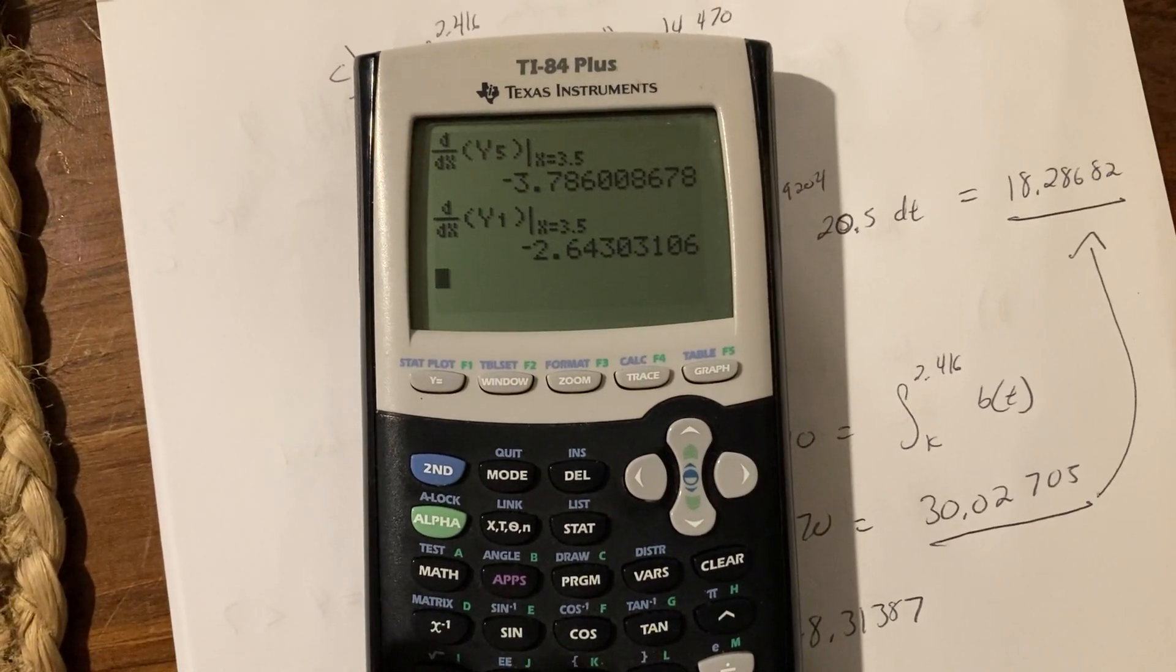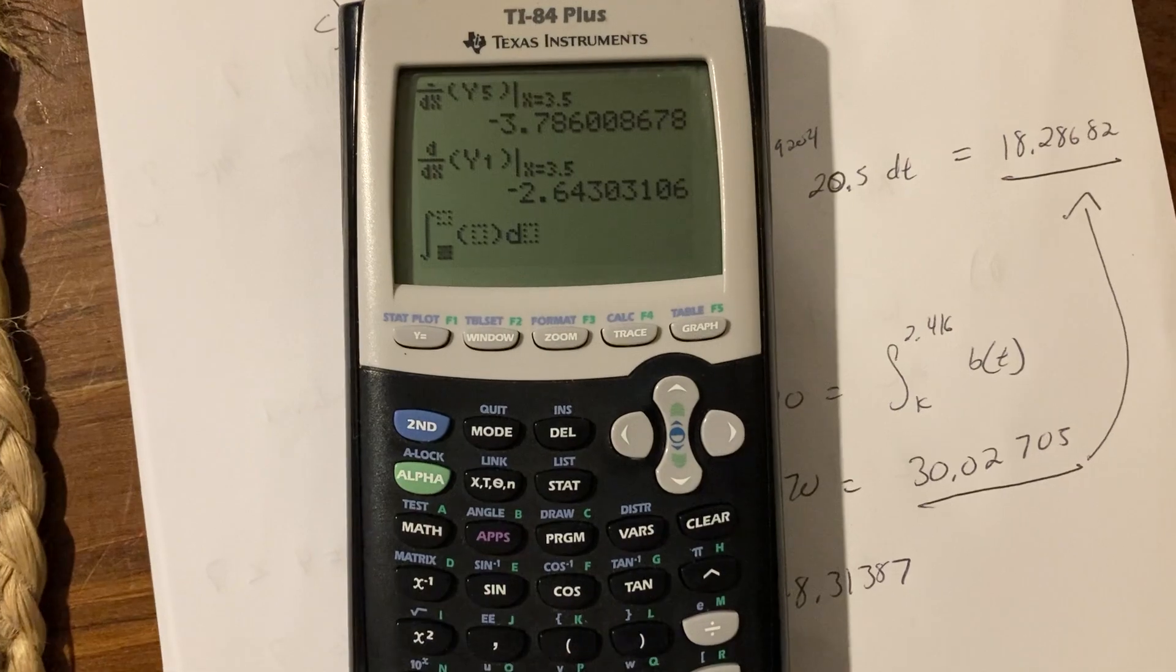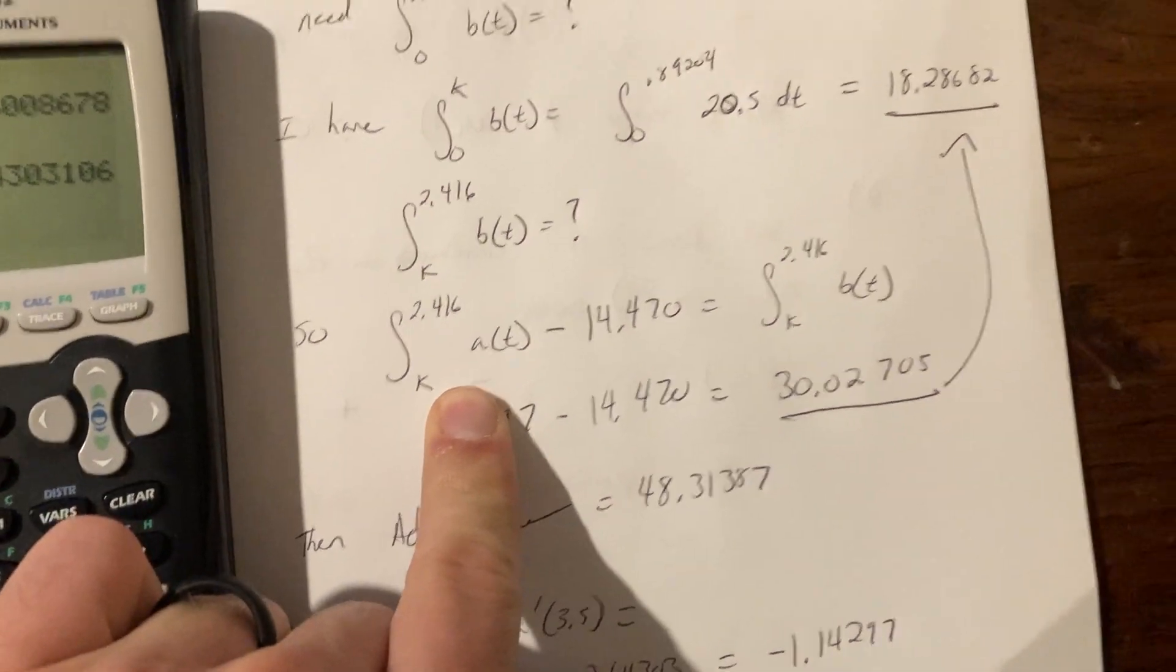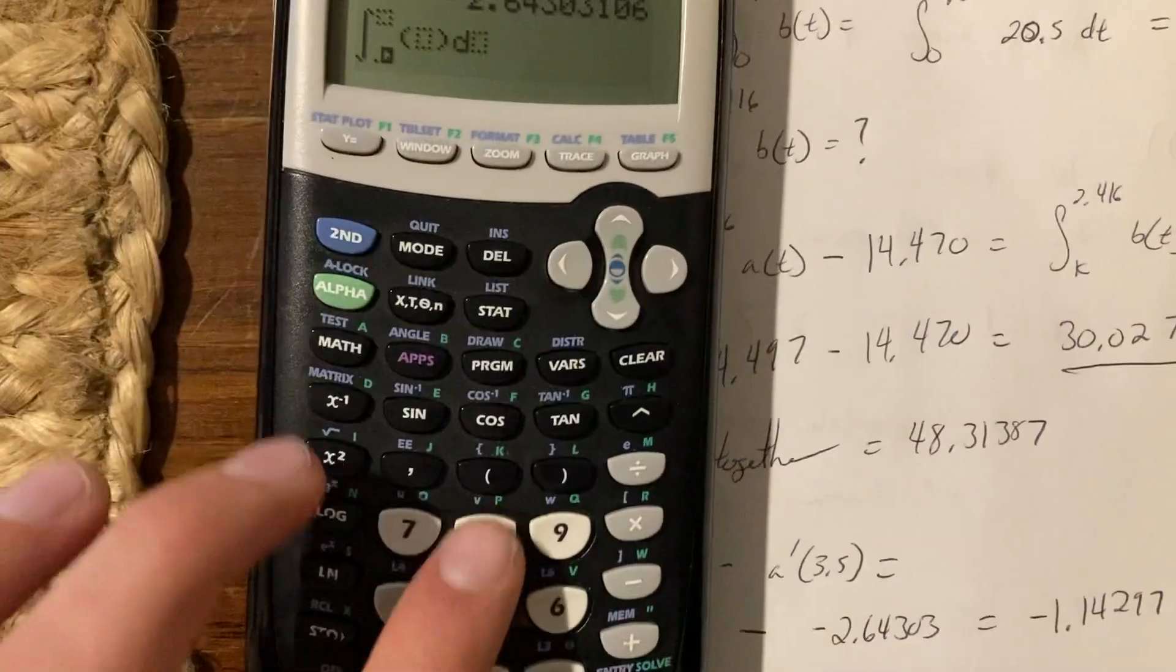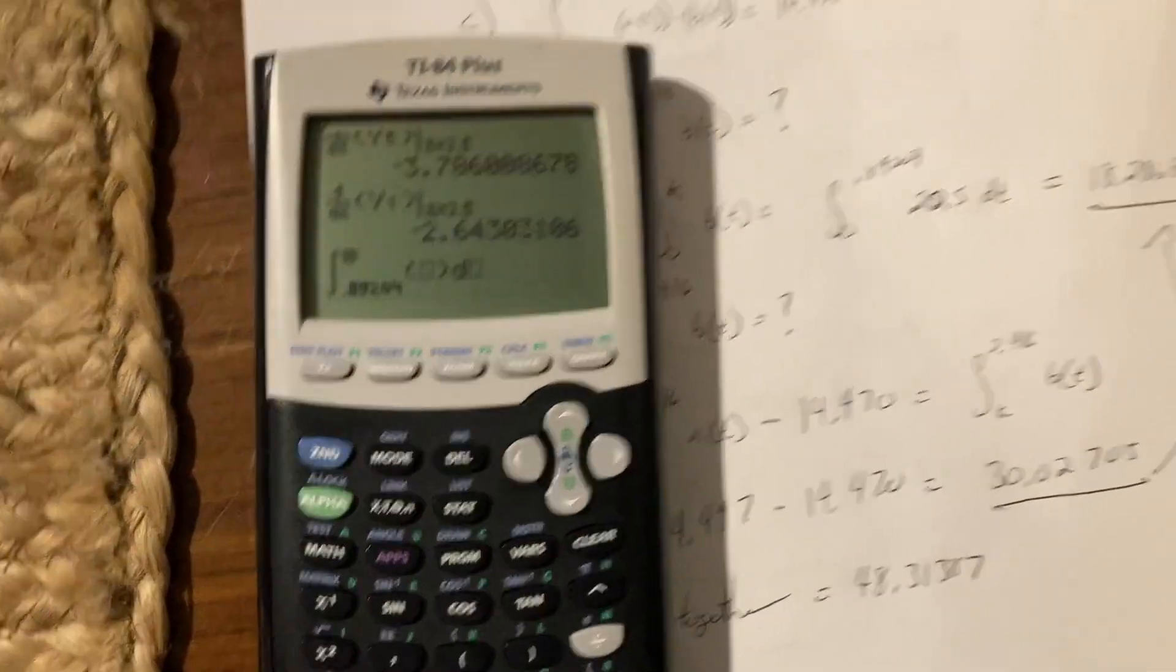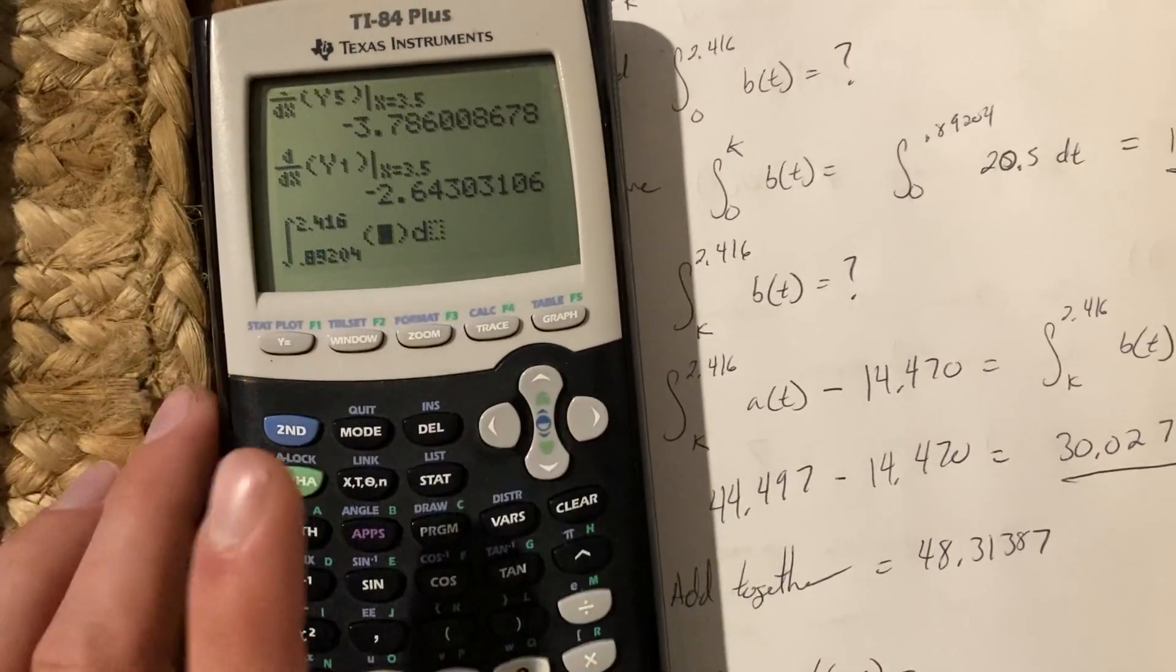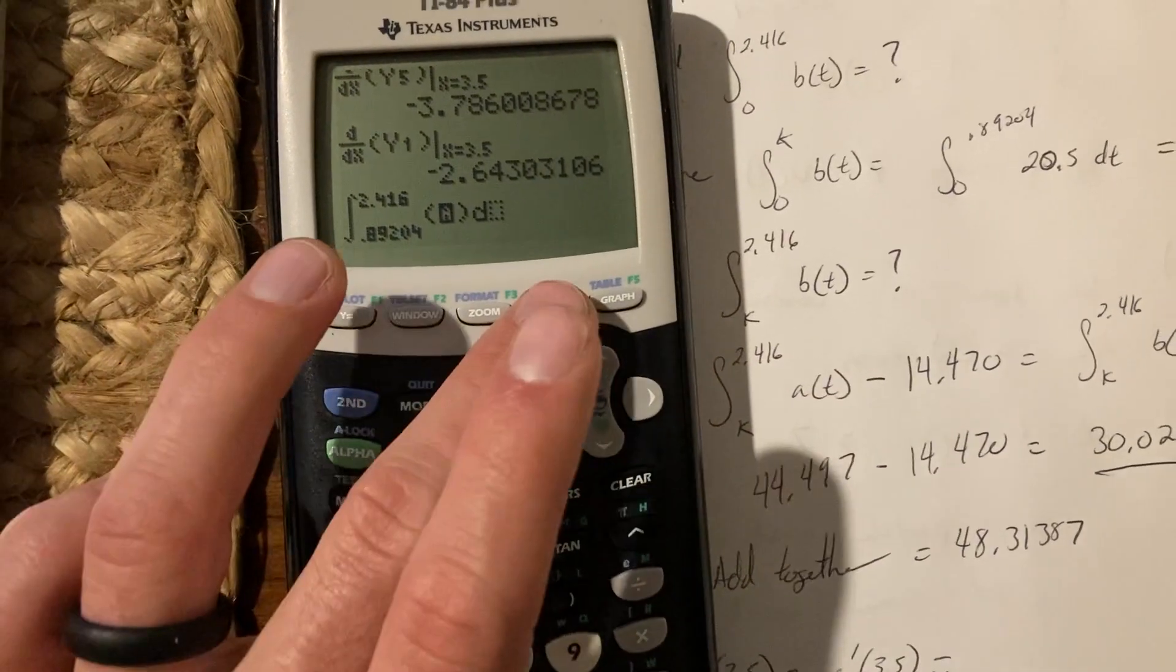Works the same way with the integrals. So math 9, I was finding the integral right here where K was 0.89204. So I'm going to go 0.89204, and this was supposed to be 2.416, 2.416. And my A of T, I have saved in Y1.